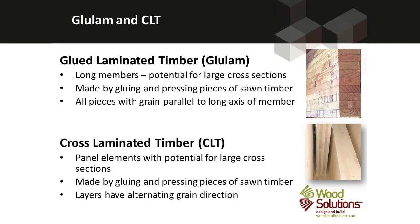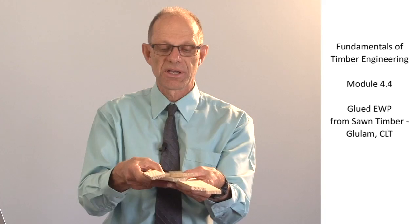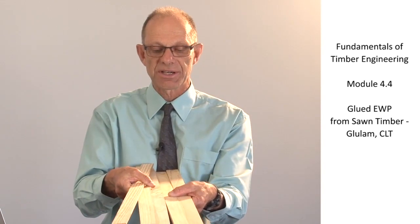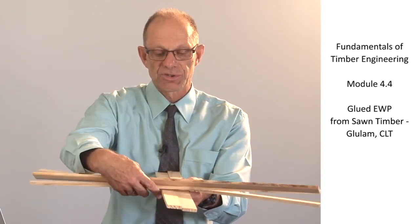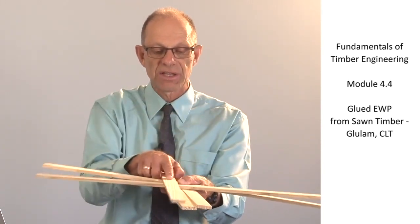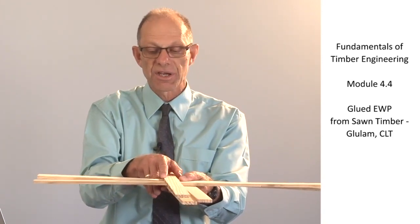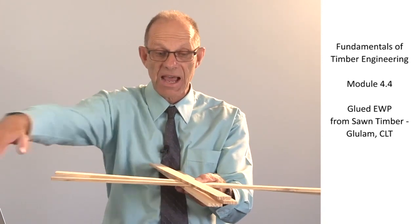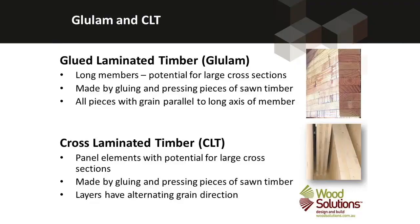Cross laminated timber is also manufactured out of sawn timber, but it is manufactured by making up layers of timber put side by side, and then each alternate layer has its grain in opposite directions, so it can make up a deep and large panel member. That is the essential difference between cross laminated timber and glued laminated timber.